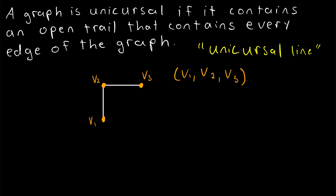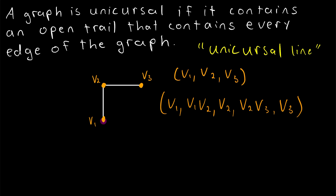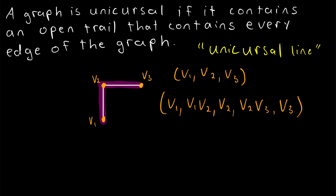In some contexts, you may also find it suitable to include the edges being traversed in your description of a trail. In which case, that unicursal trail would look like this: you have a vertex, then the edge traversed, then the vertex, then the edge traversed, then the vertex.